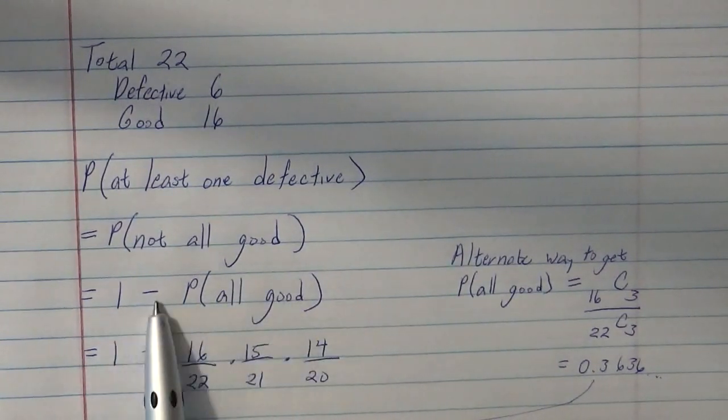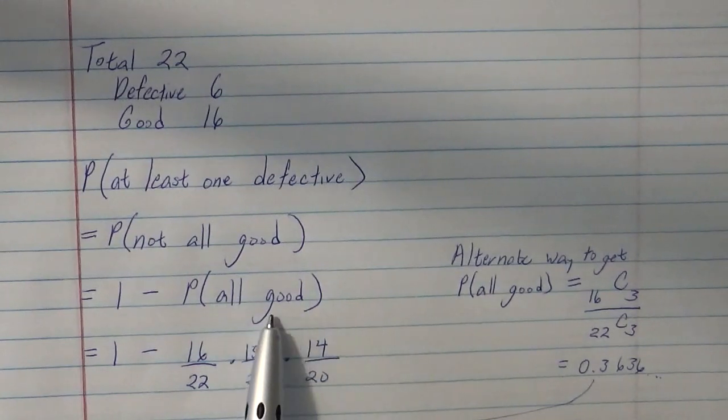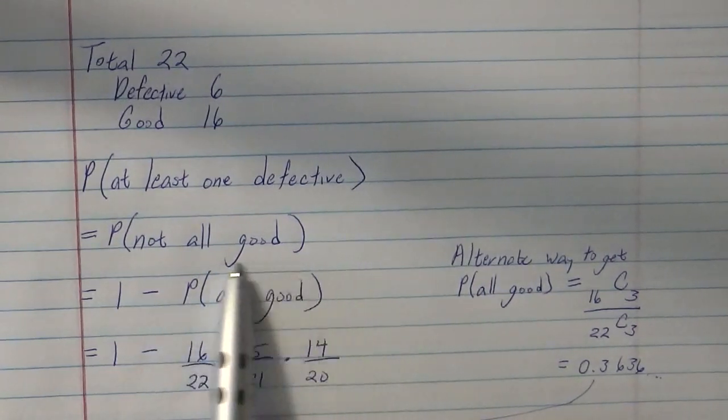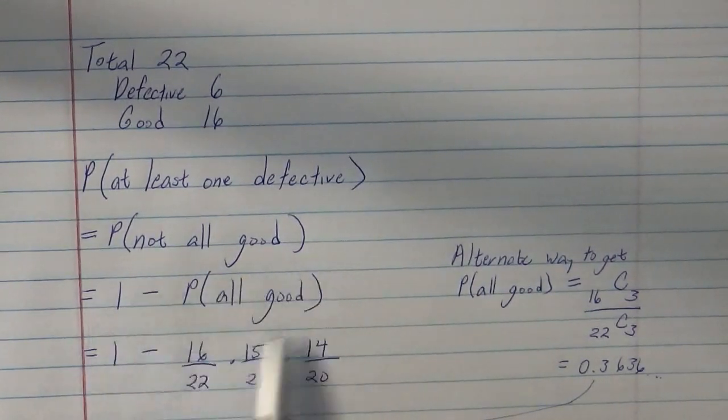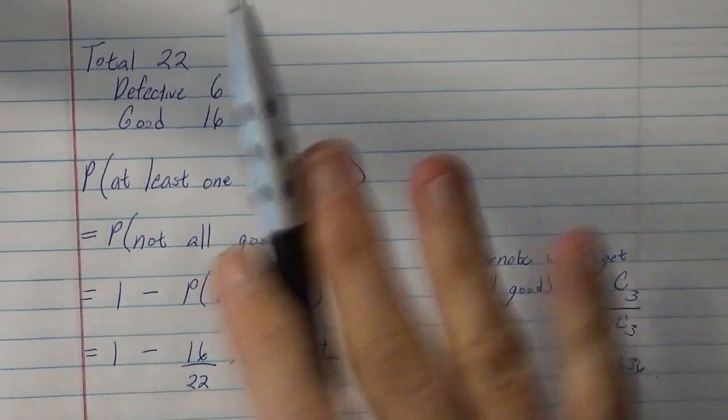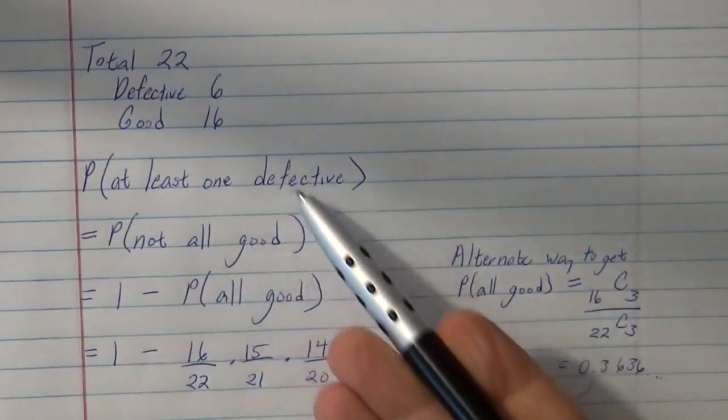we don't want that, 1 minus that, that's what we want to do. So if there were a 20% possibility that all were good, then there would be an 80% possibility that not all of them were good, and at least one would be defective.